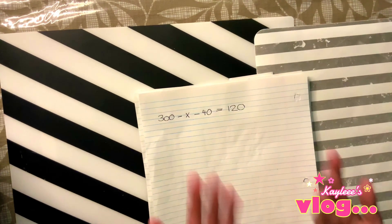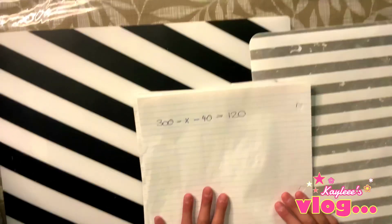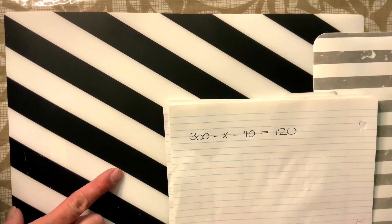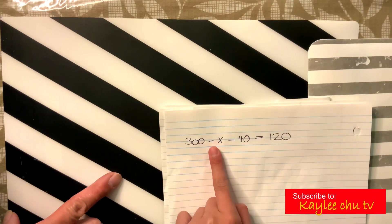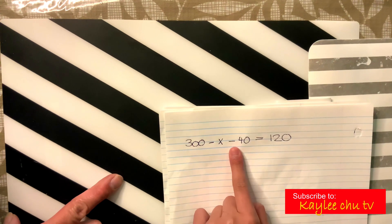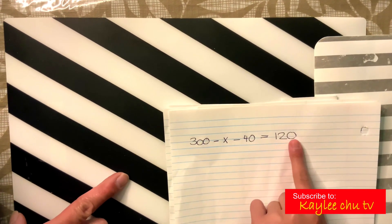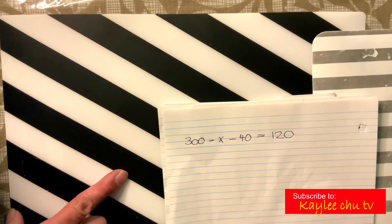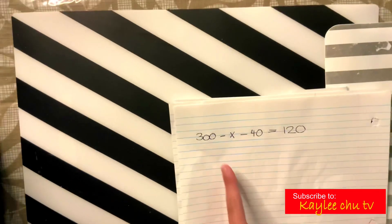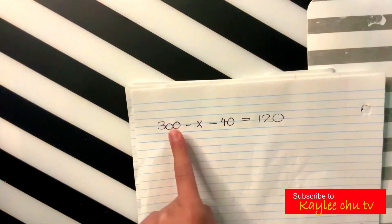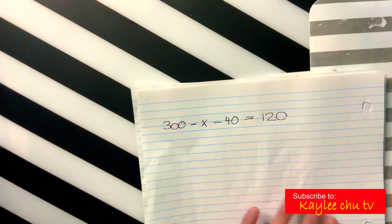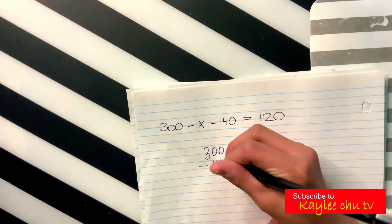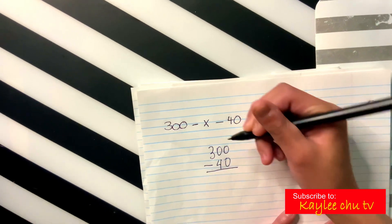Okay, on to my first equation. So on our first equation, we are going to find out what is 300 minus x minus 40 equals 120. So the first thing you're going to have to do is subtract. So our first step is to subtract 300 minus 40. So let's do that. So 300 minus 40 equals. So let's begin.